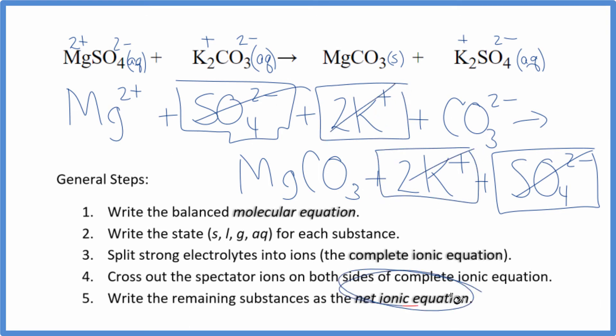What's left? That's the net ionic equation for MgSO4 plus K2CO3. Let me clean this up, and I'll write the states in. We'll have our net ionic equation.